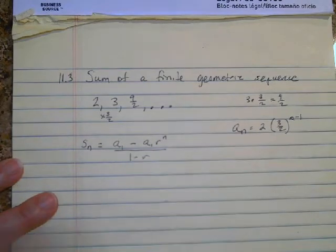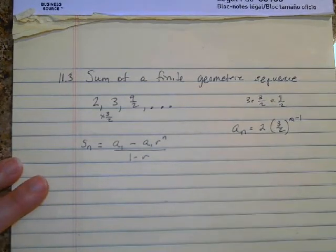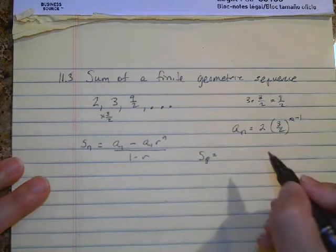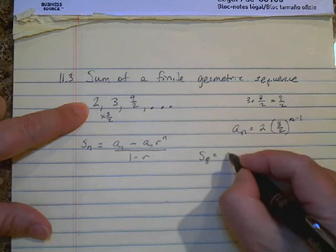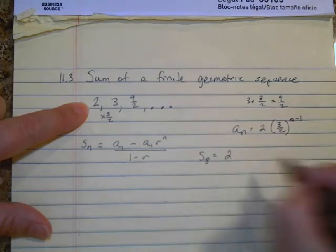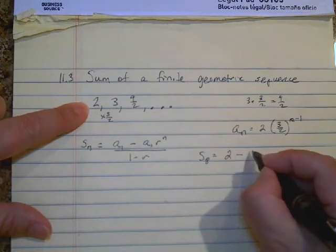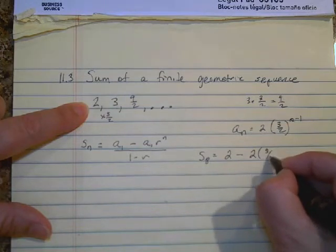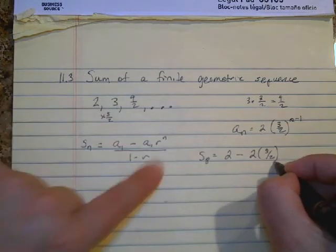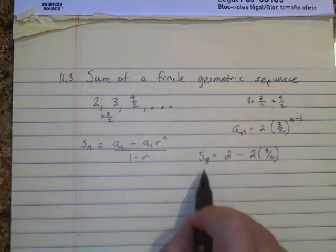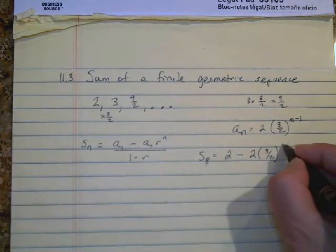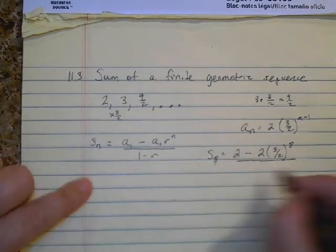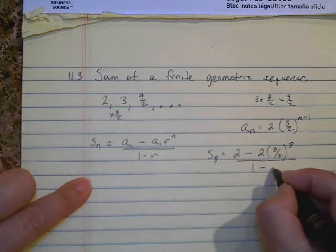So in this particular case we're finding the sum of the first eight terms. My first term is two, subtract two times the ratio to the n power - and the n power is however many terms we're adding, so in this case I'm going to put eight - over one minus the rate.